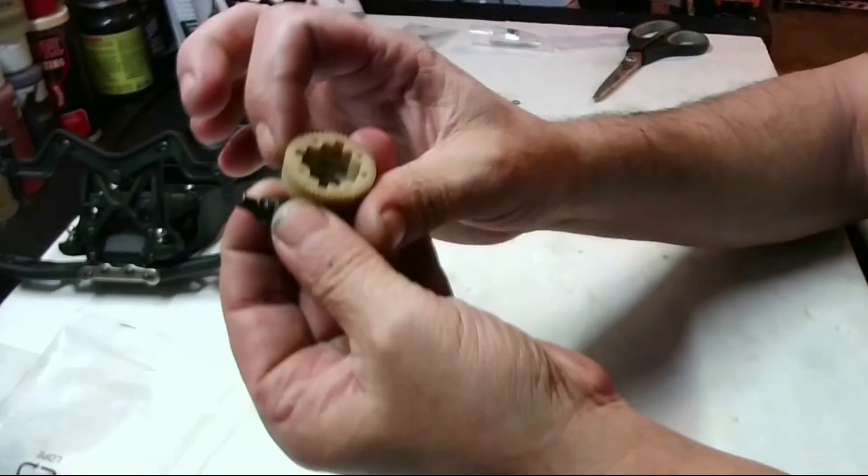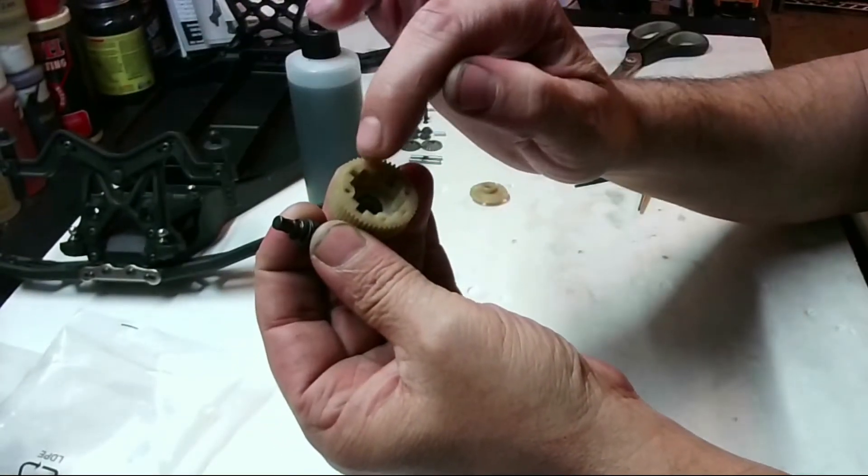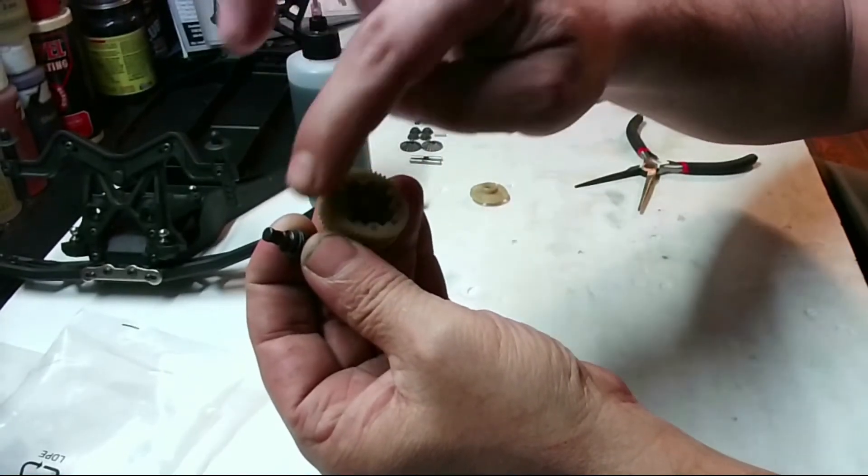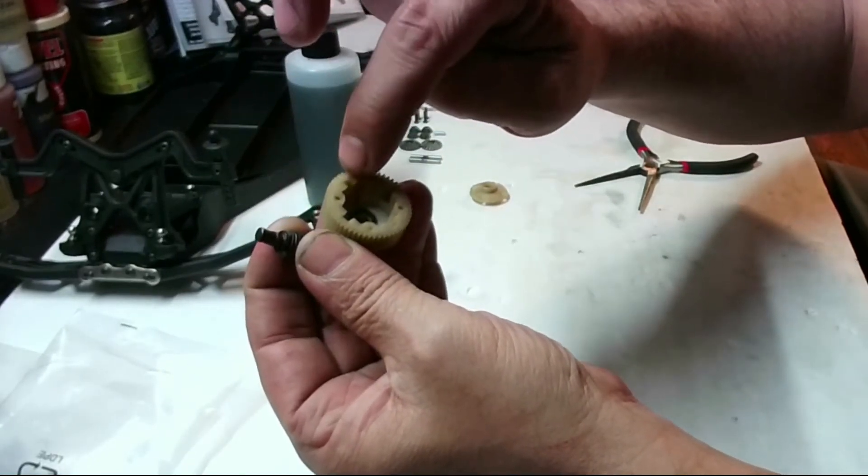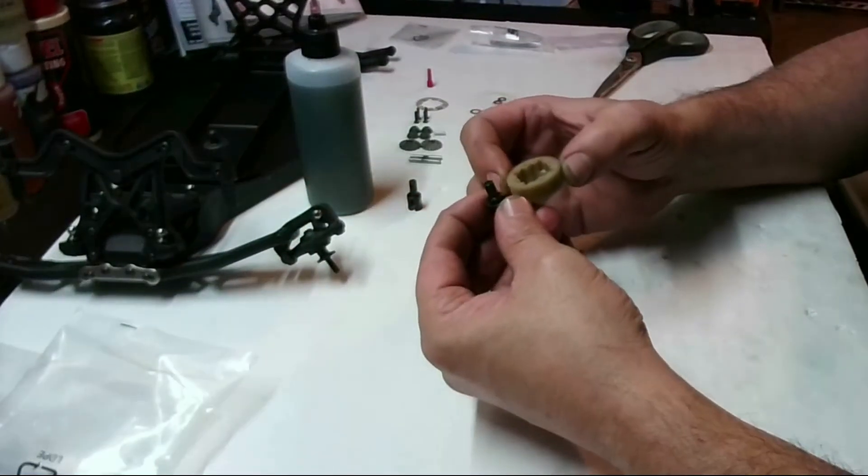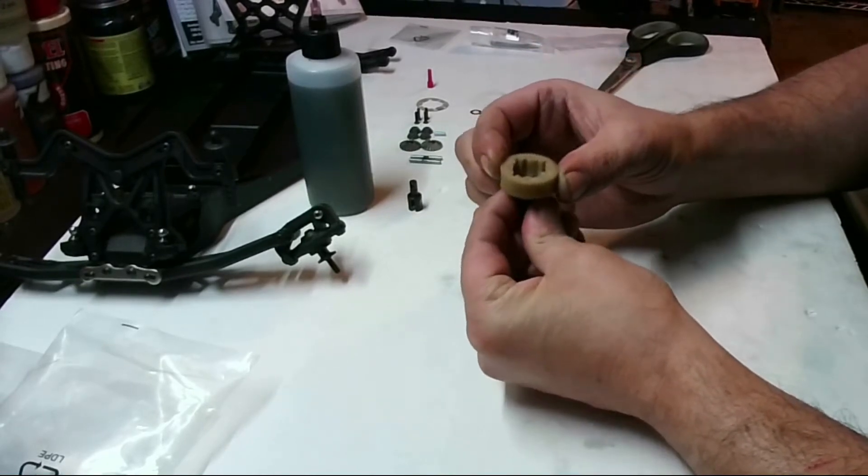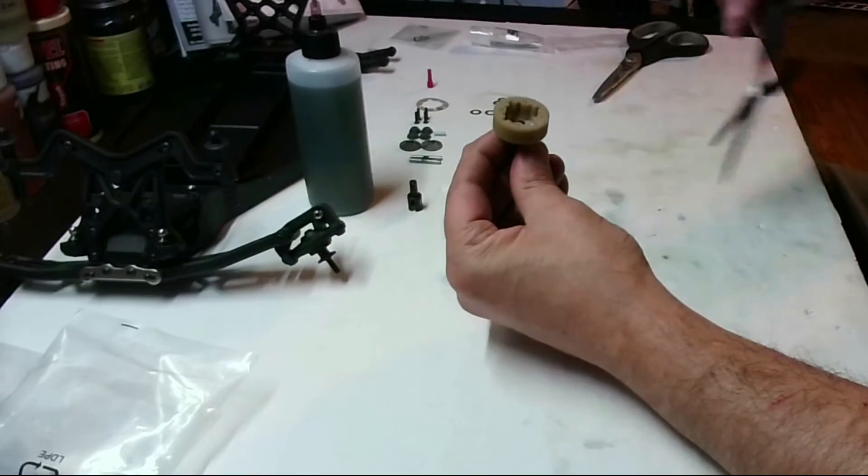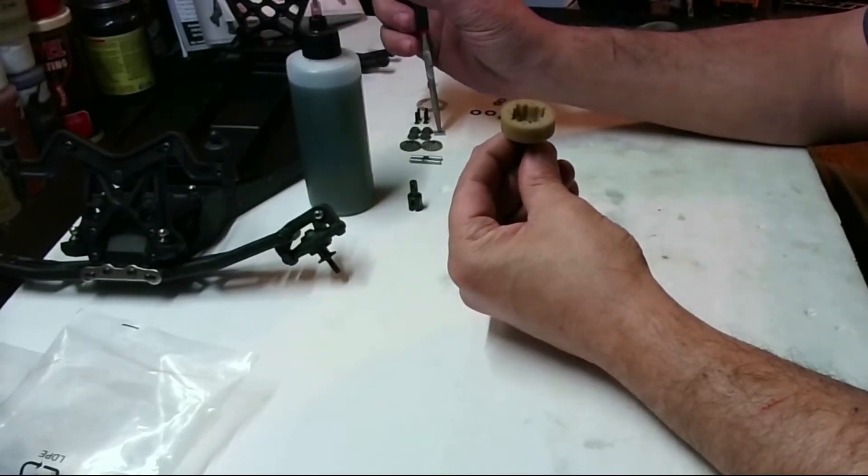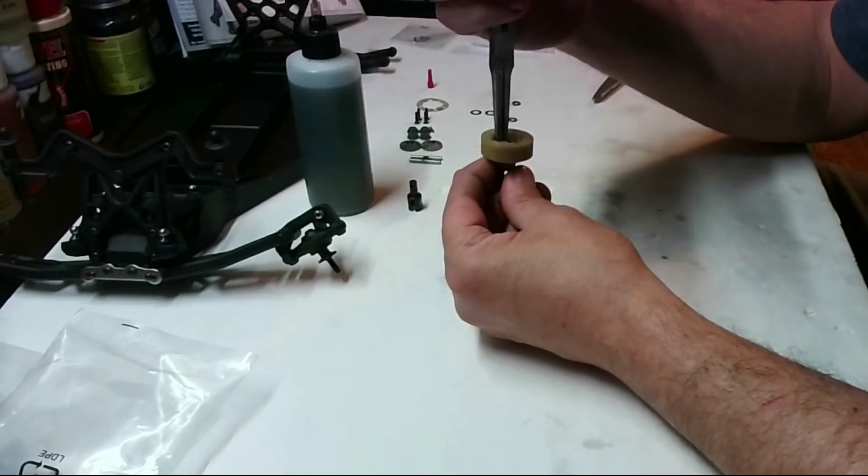Right here on the side you have four slots where your gears are gonna set in. One of these slots goes all the way to the base, the other three don't. So line your pin up with the slot that goes all the way to the base. That way you can get your pin in, cause that's the only way you can get the pin in and out of these.